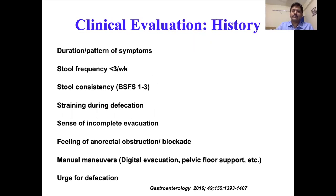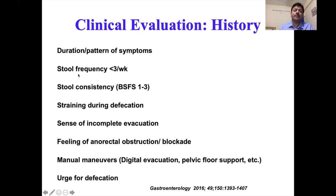Approaching a patient with chronic constipation: many patients do not require a lot of investigation, so a good history and examination is essential to decide how much evaluation is needed. In the history, we first assess the pattern of bowel movement and nature of stool: how long symptoms have lasted, whether intermittent or continuous, frequency per week, consistency of stool using an objective method like the Bristol Stool Form Scale, whether the patient strains, has a sense of incomplete evacuation, or a feeling of anorectal obstruction or blockade.